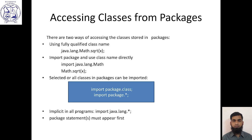Accessing the classes from packages: there are two ways to access the classes stored in packages. First, using the fully qualified class name — if you want to access a specific function from a class, you can directly use the class name and function. For example, to access the square root function, you write java.lang.Math.sqrt() and pass the parameter. Second, to import class packages, we use the import keyword followed by the package name. If you want all classes from the package, write a star (*). If you want a specific class, write the class name.